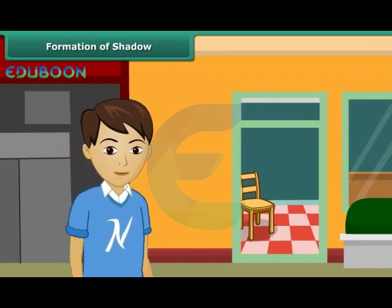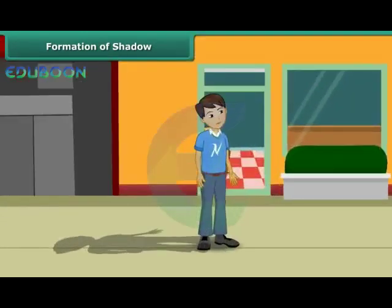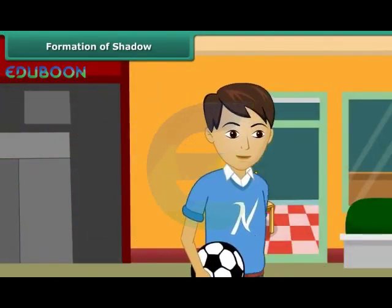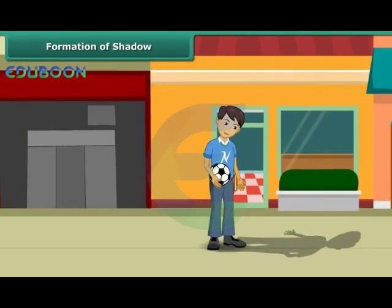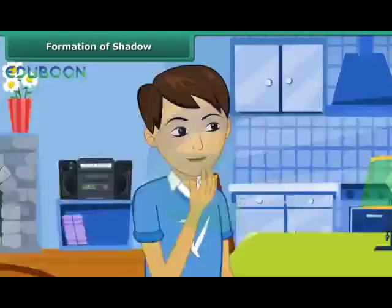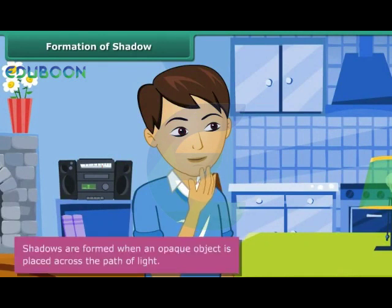On a Sunday morning, you are on your way to the market to buy some milk. The sun is shining bright on your face and you see your shadow on the ground behind you. The same day in the evening, you are out in the park playing football. The sun's rays fall on your back and you see your shadow on the ground in front of you. After a while, the sun sets and there are no more shadows. You want to understand when shadows are formed and are curious to know the direction in which they form. Shadows are formed when an opaque object is placed across the path of light.